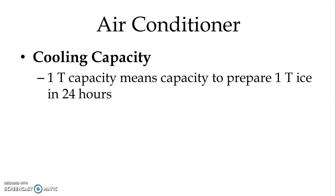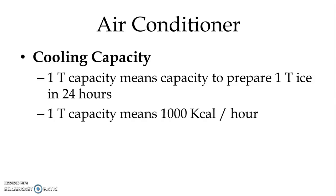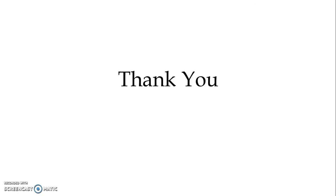One ton capacity means the capacity to prepare 1 ton of ice in 24 hours. Alternatively, 1 ton capacity means 1,000 kilocalories per hour. So this is all about room air conditioner. Thank you for watching my video. Keep watching. Thank you very much.